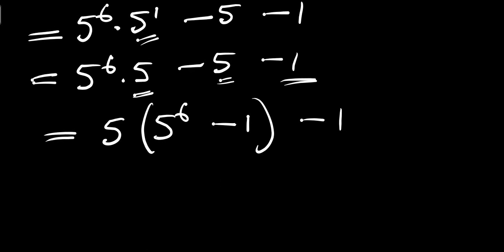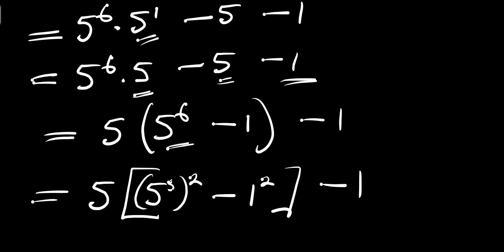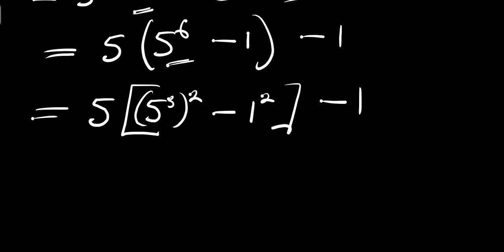Next, we can rewrite 5 power 6 as (5 power 3) squared, and 1 raised to the power of 2 is still 1, so we have minus 1. At this point we have a squared term and a squared term, so we can make use of the difference of two squares.